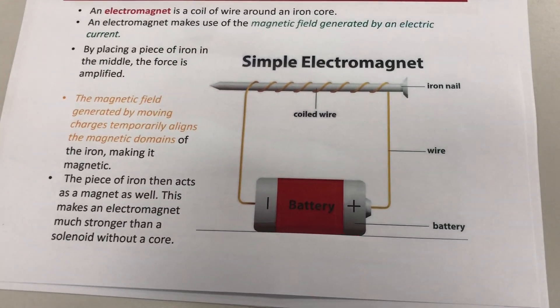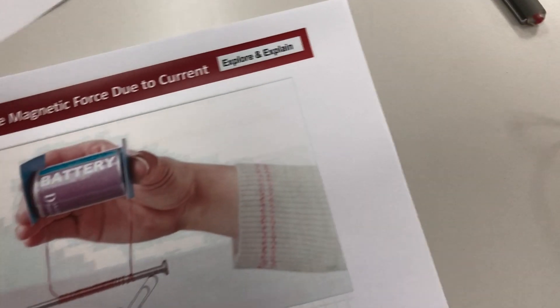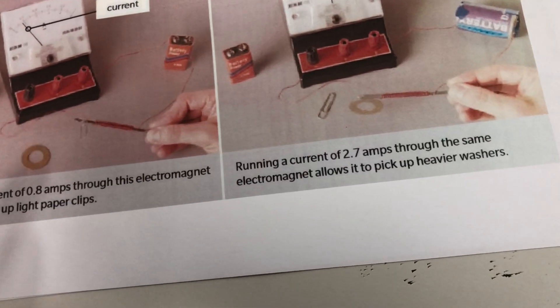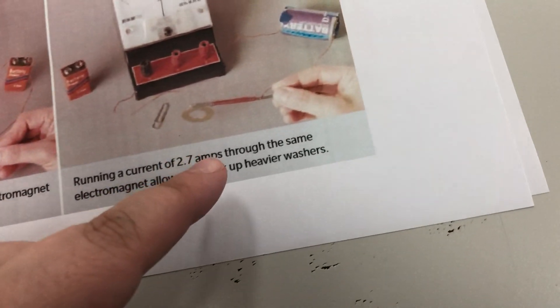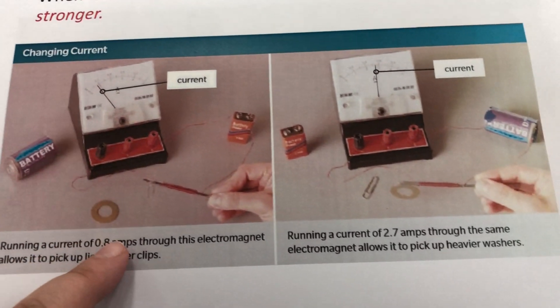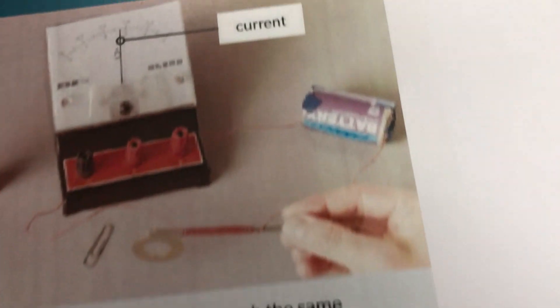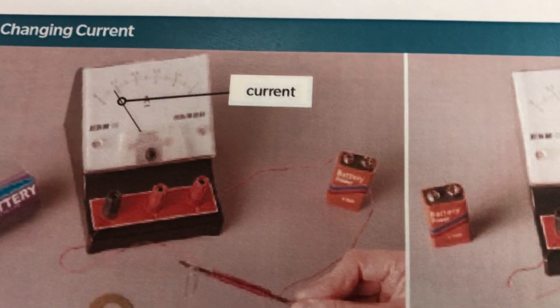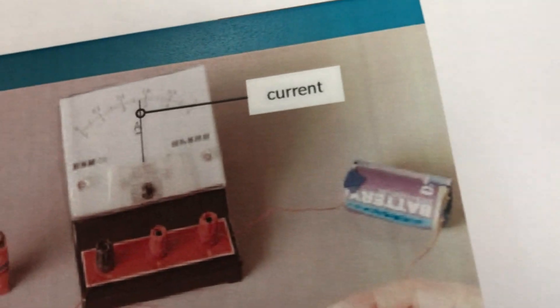Now there are a few things that affect an electromagnet. The first is the current — if you have more current passing through, you're able to pick up more paper clips. Here with less current it picks up only a small paper clip, and here with more current it's able to pick up something bigger. They use a meter to measure how much current is flowing.